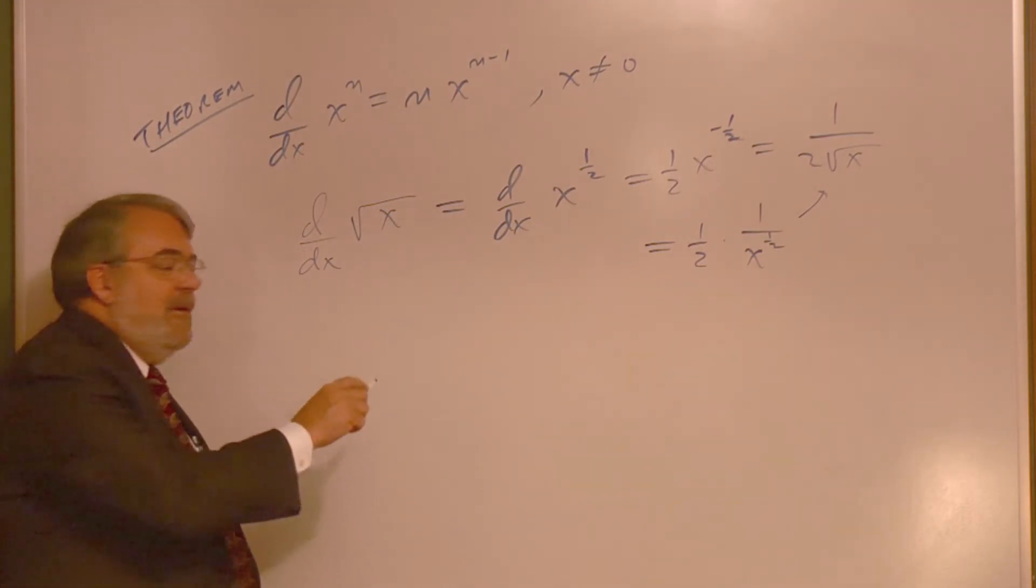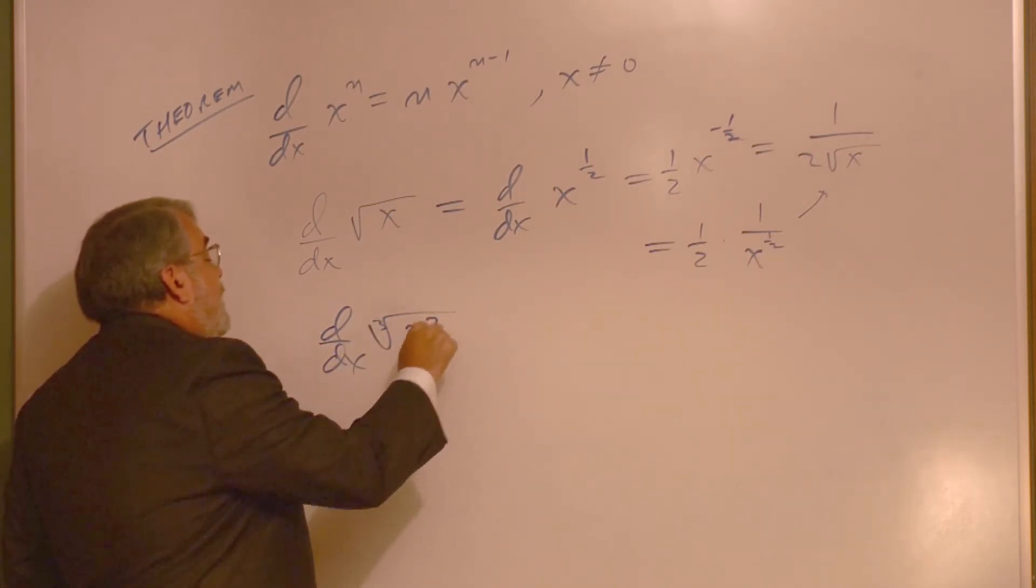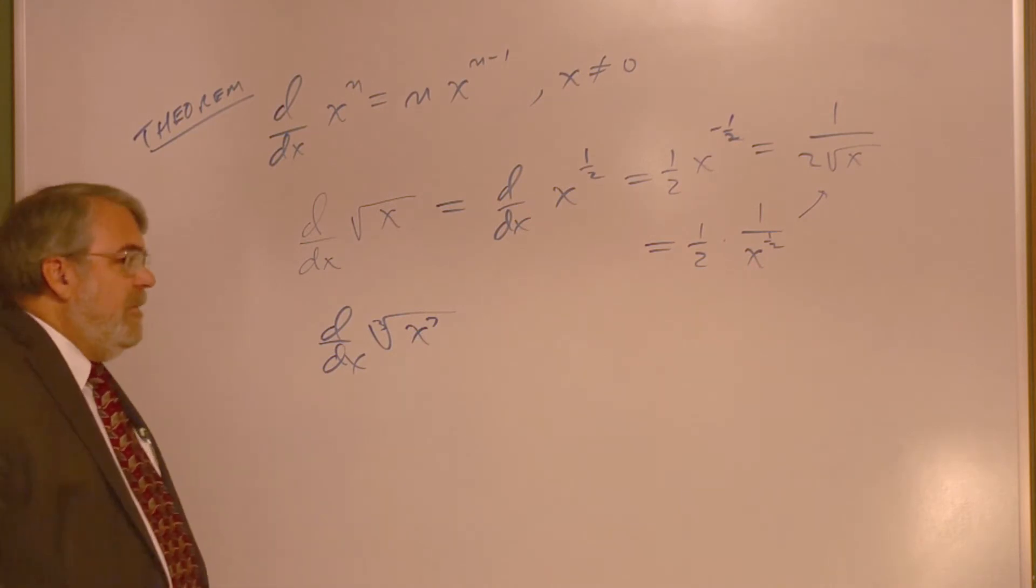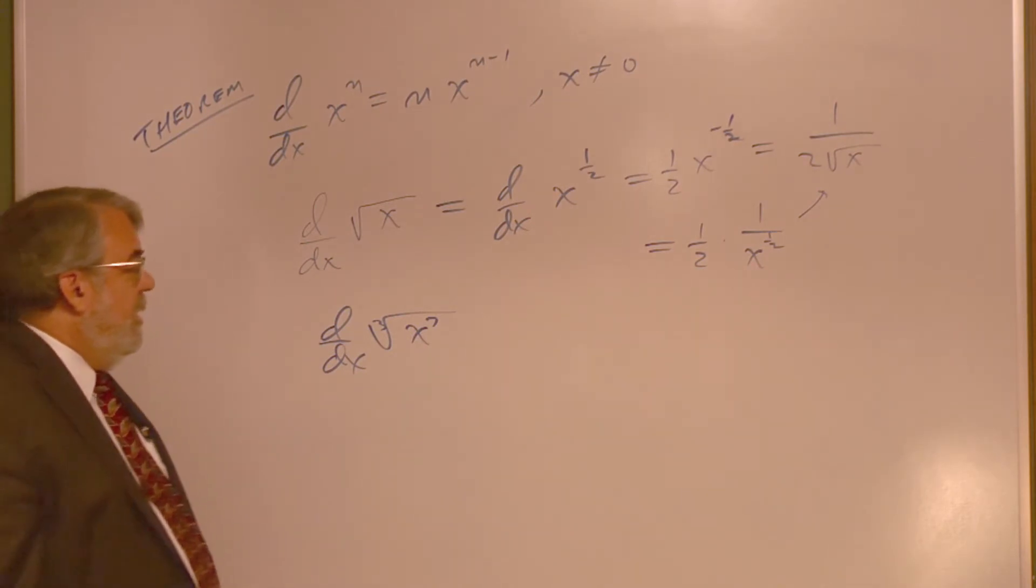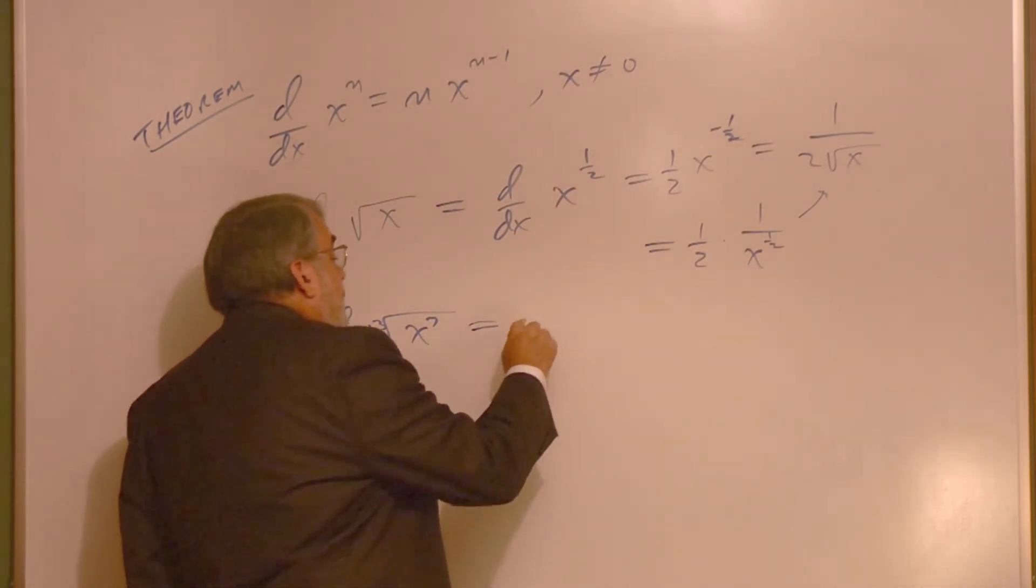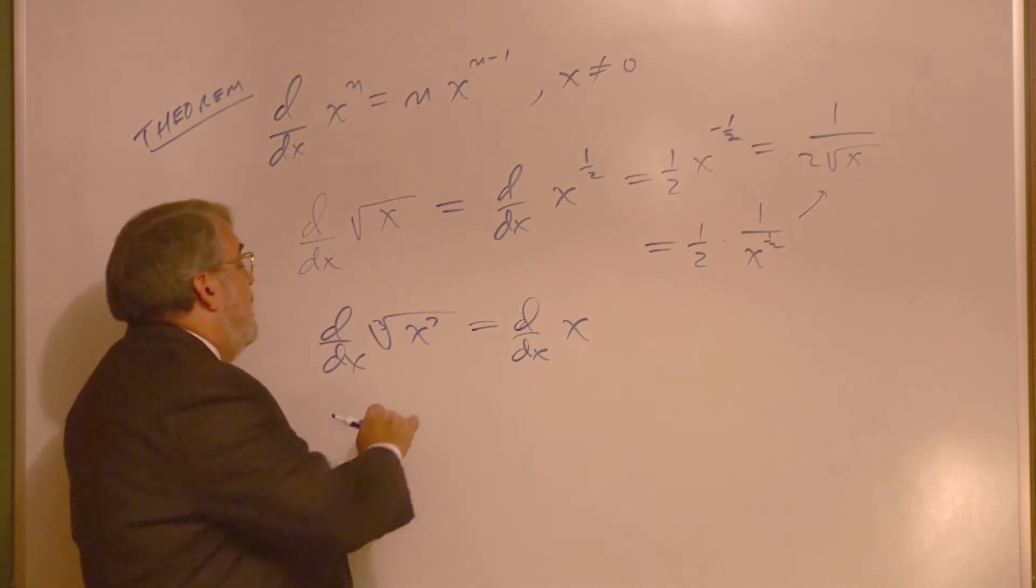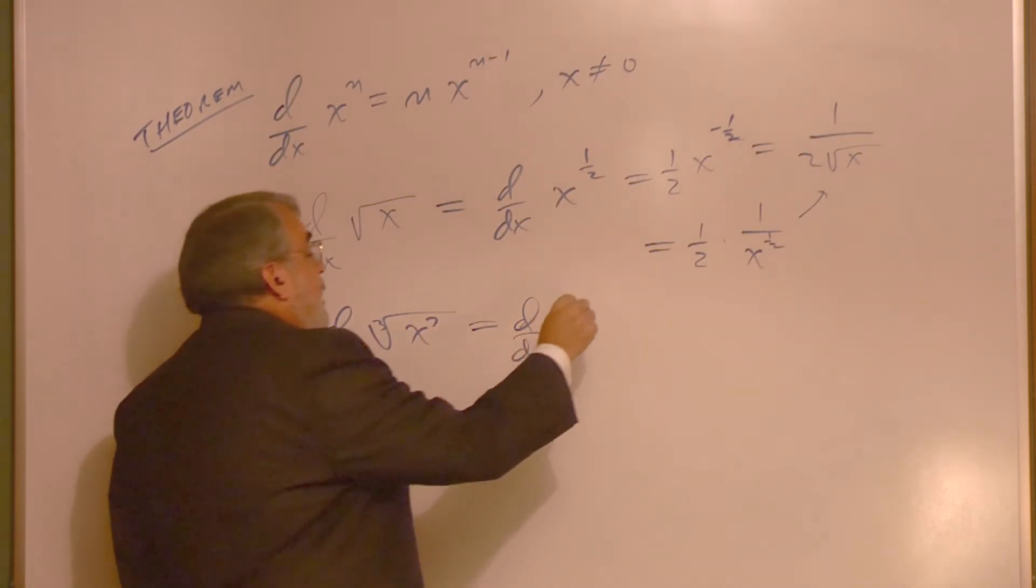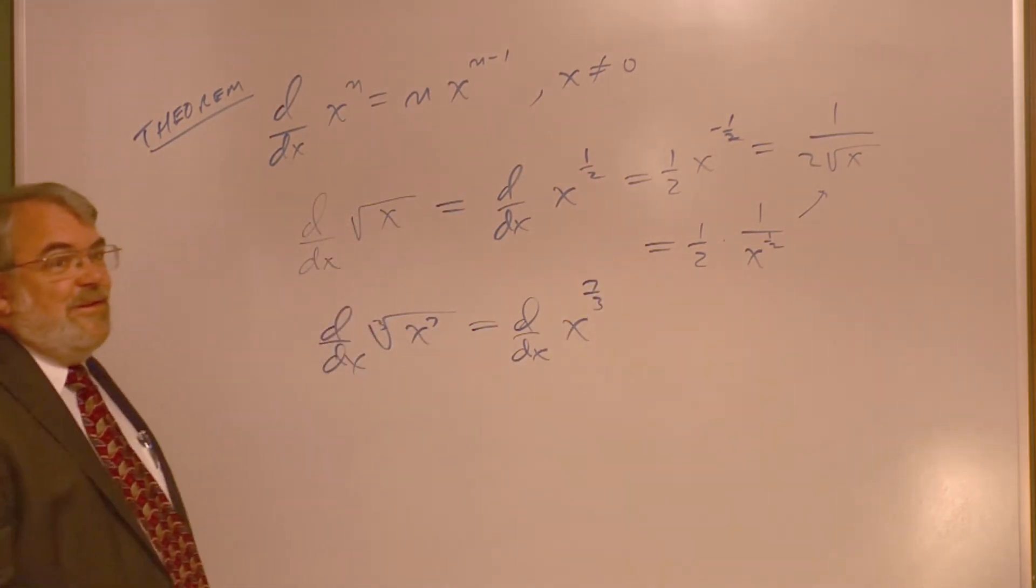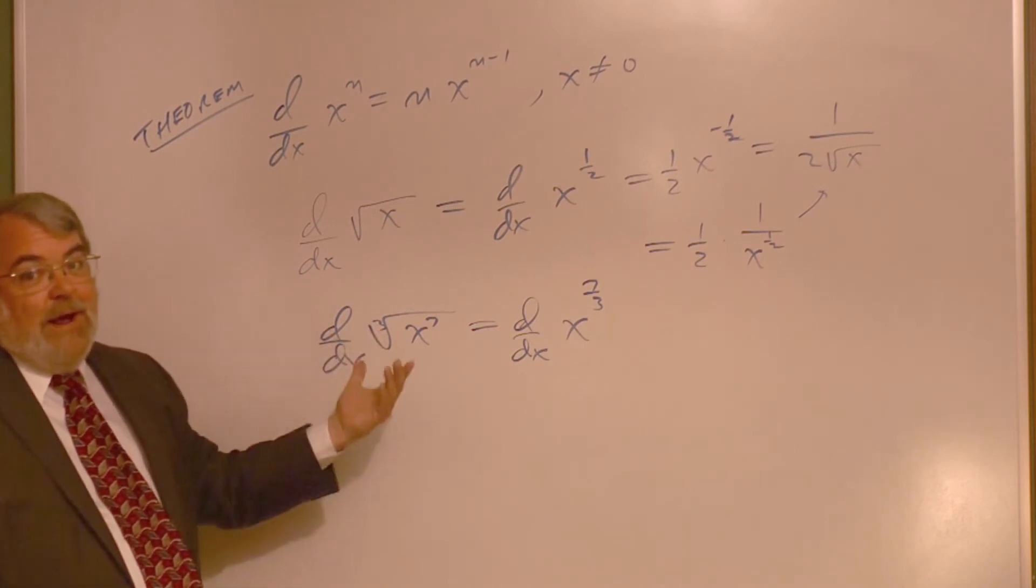We better do another one of those. How about the derivative of the cube root of x to the 7th? This would be the derivative of x raised to the—now what would that be? The numerator is 7, the denominator is 3, so 7 thirds. The derivative of x to the 7 thirds. And so again, the denominator is the index of the radical. In this case, the radical is a cube root.